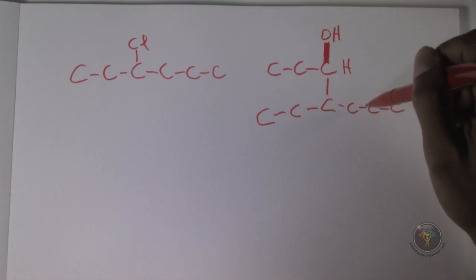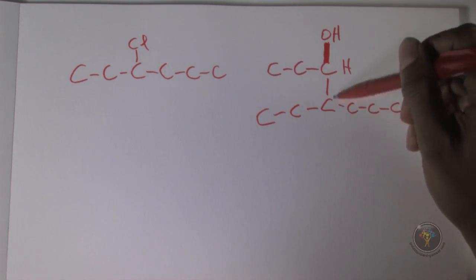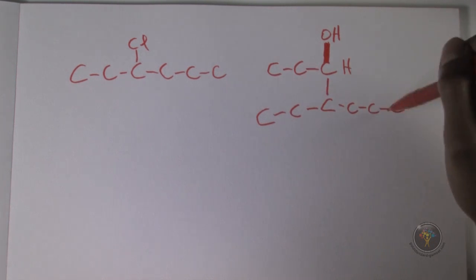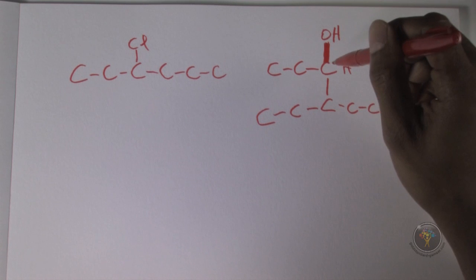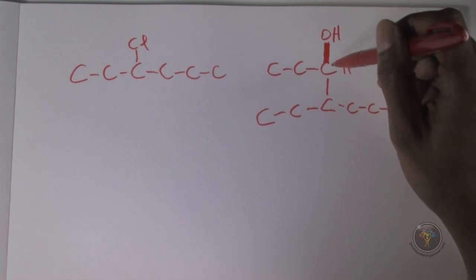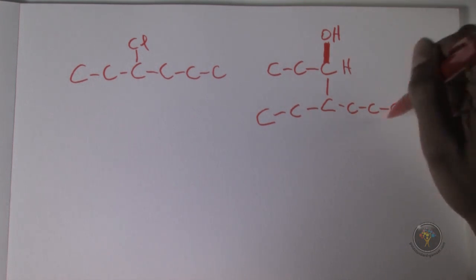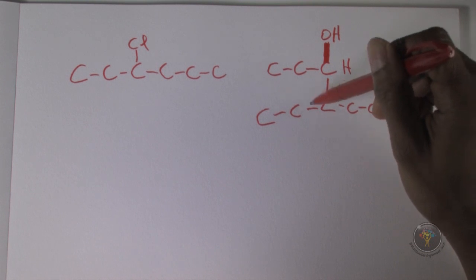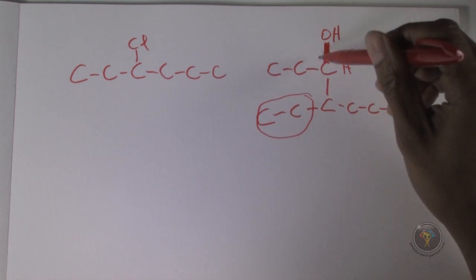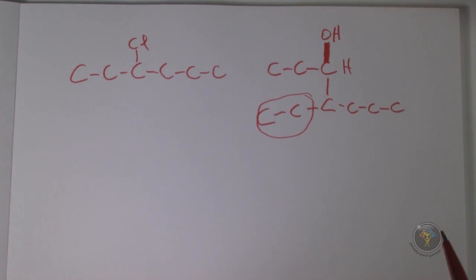Counting carbons: the longest chain has 7 carbons, so it's heptanol. The OH is at position 3, giving 3-heptanol. There's an ethyl group at position 4, so the full name is 4-ethyl-3-heptanol. That's answer choice A for question 96.